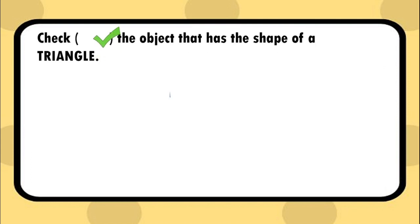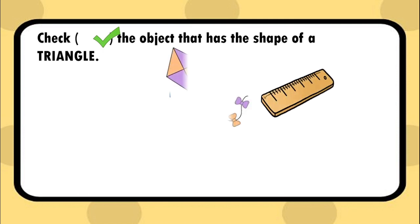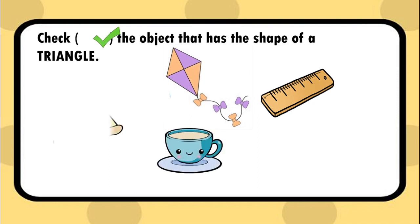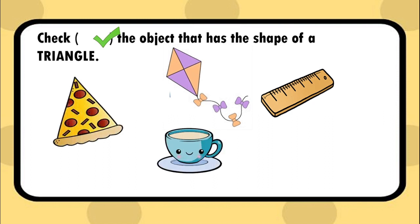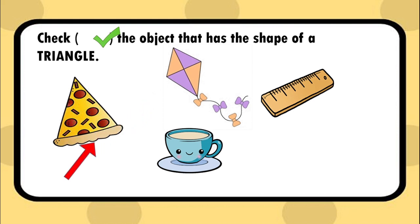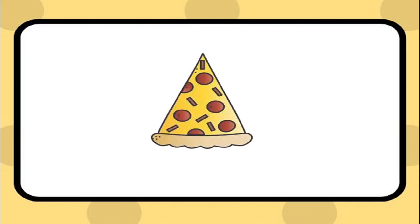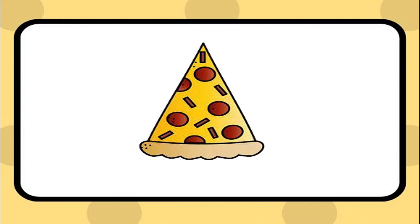Which object has the shape of a triangle? Is this a shape of a triangle? Nope. Is this a shape of a triangle? Yes, the pizza has the shape of a triangle.